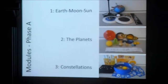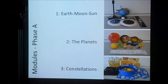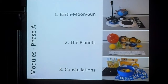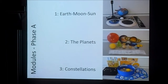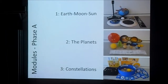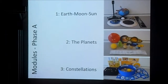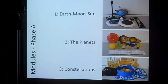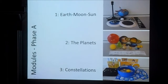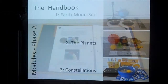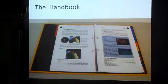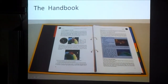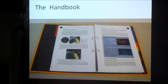The box has a modular concept and is currently in three modules: one is on the Earth, Moon, and Sun; the second is on planets; and the third is constellations. Most of the experiments are very simple and range from characteristics of the moon to day and night and seasons. The handbook is also a counterpart of the activities and the materials.